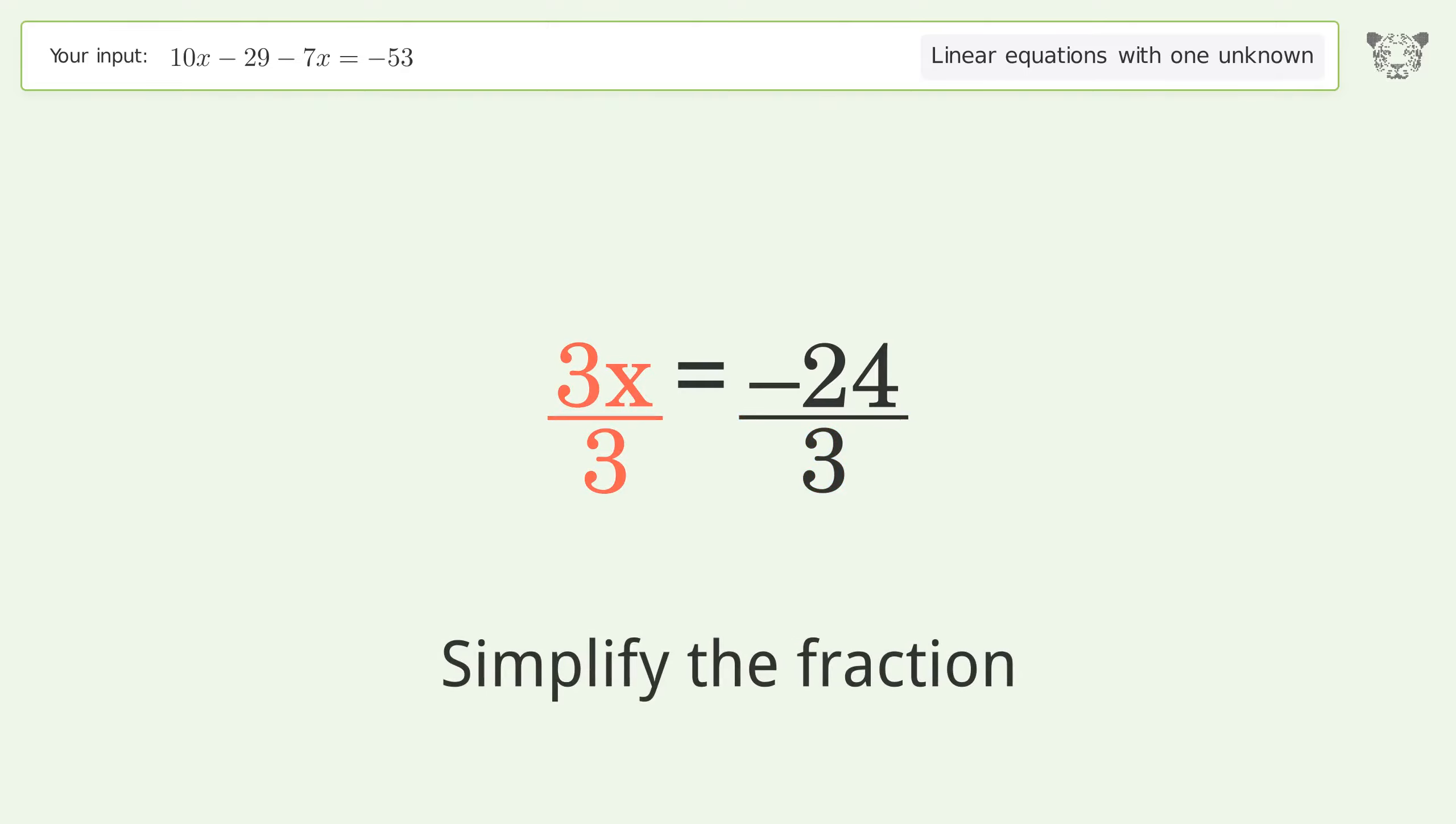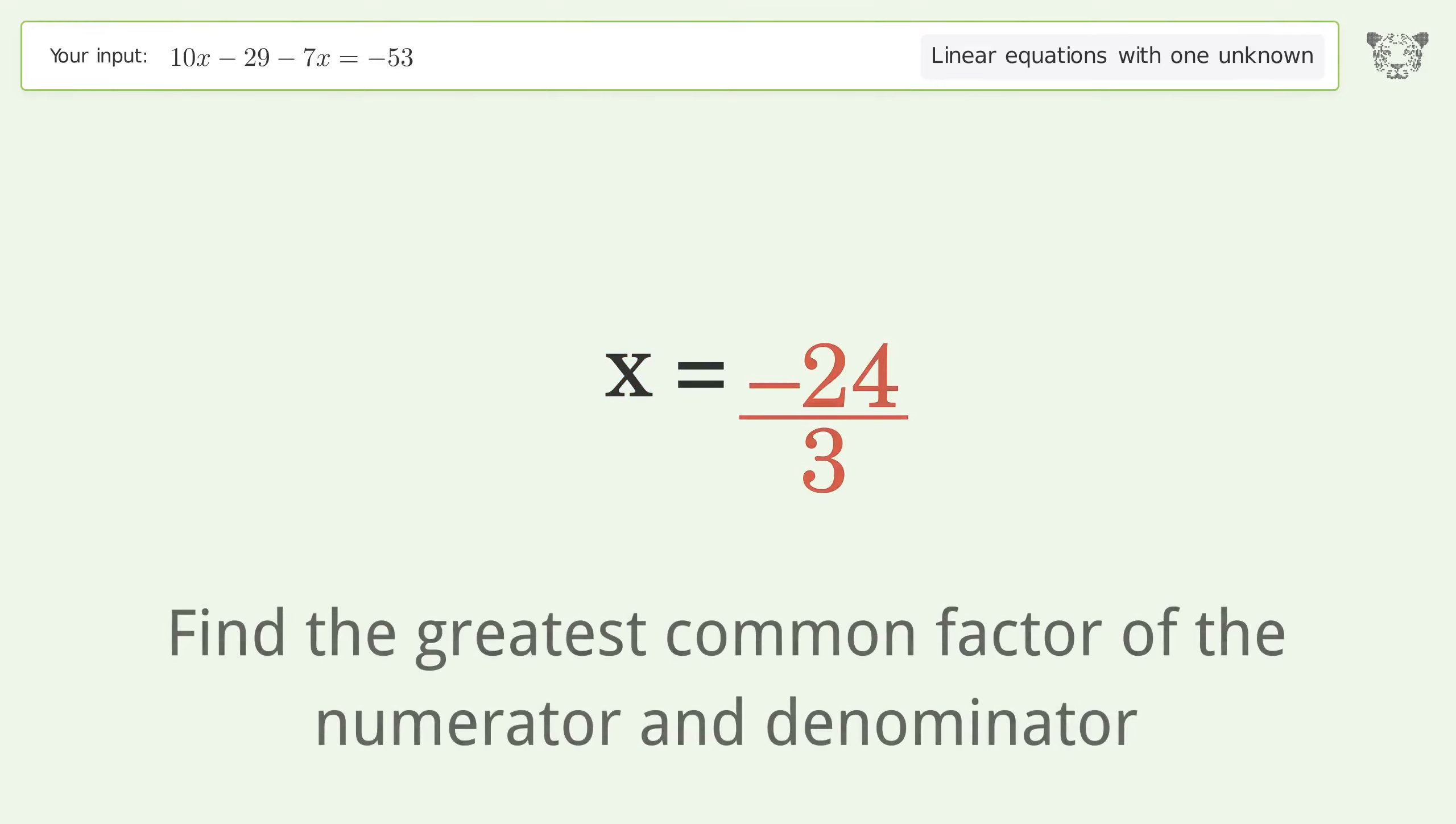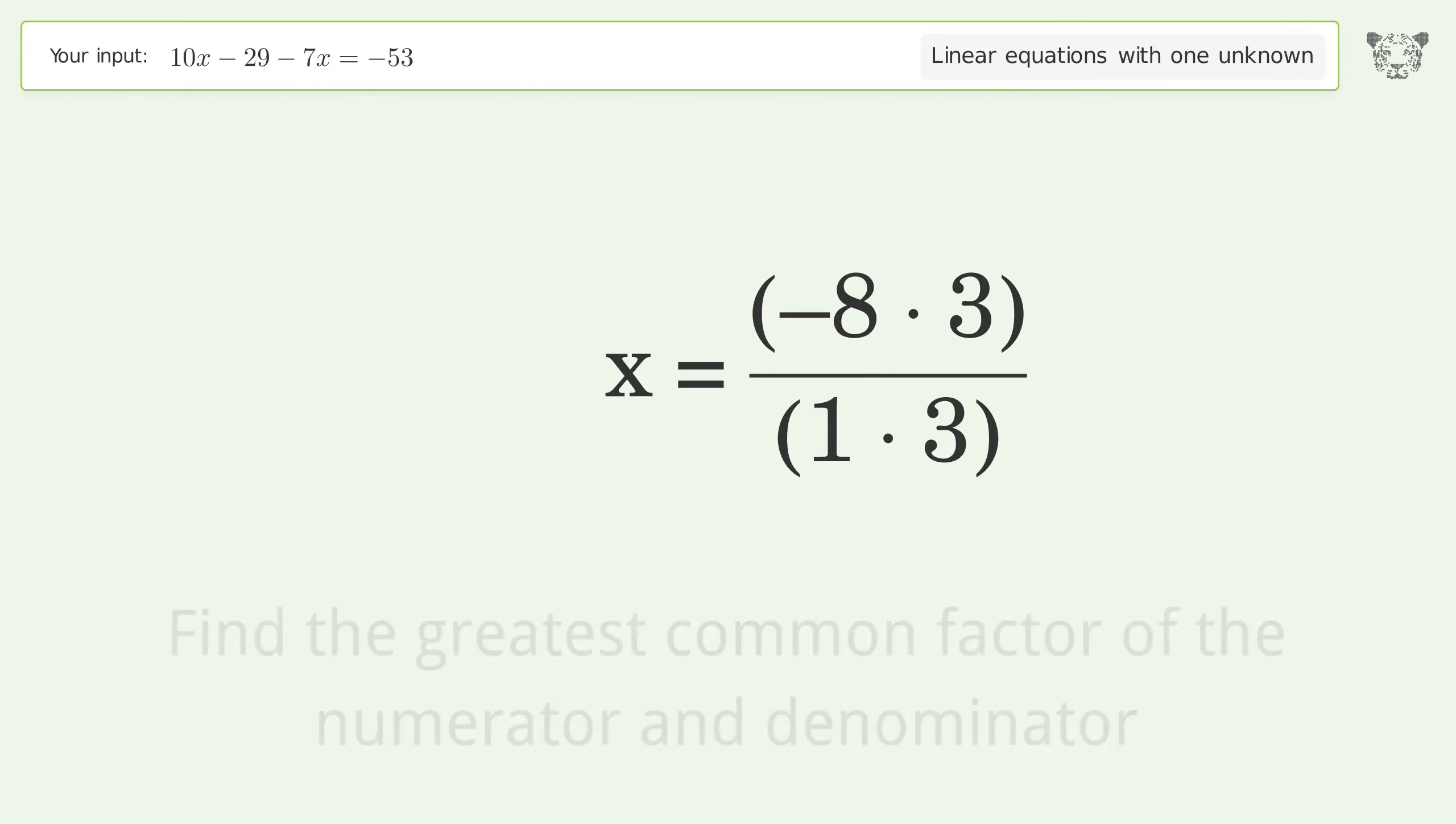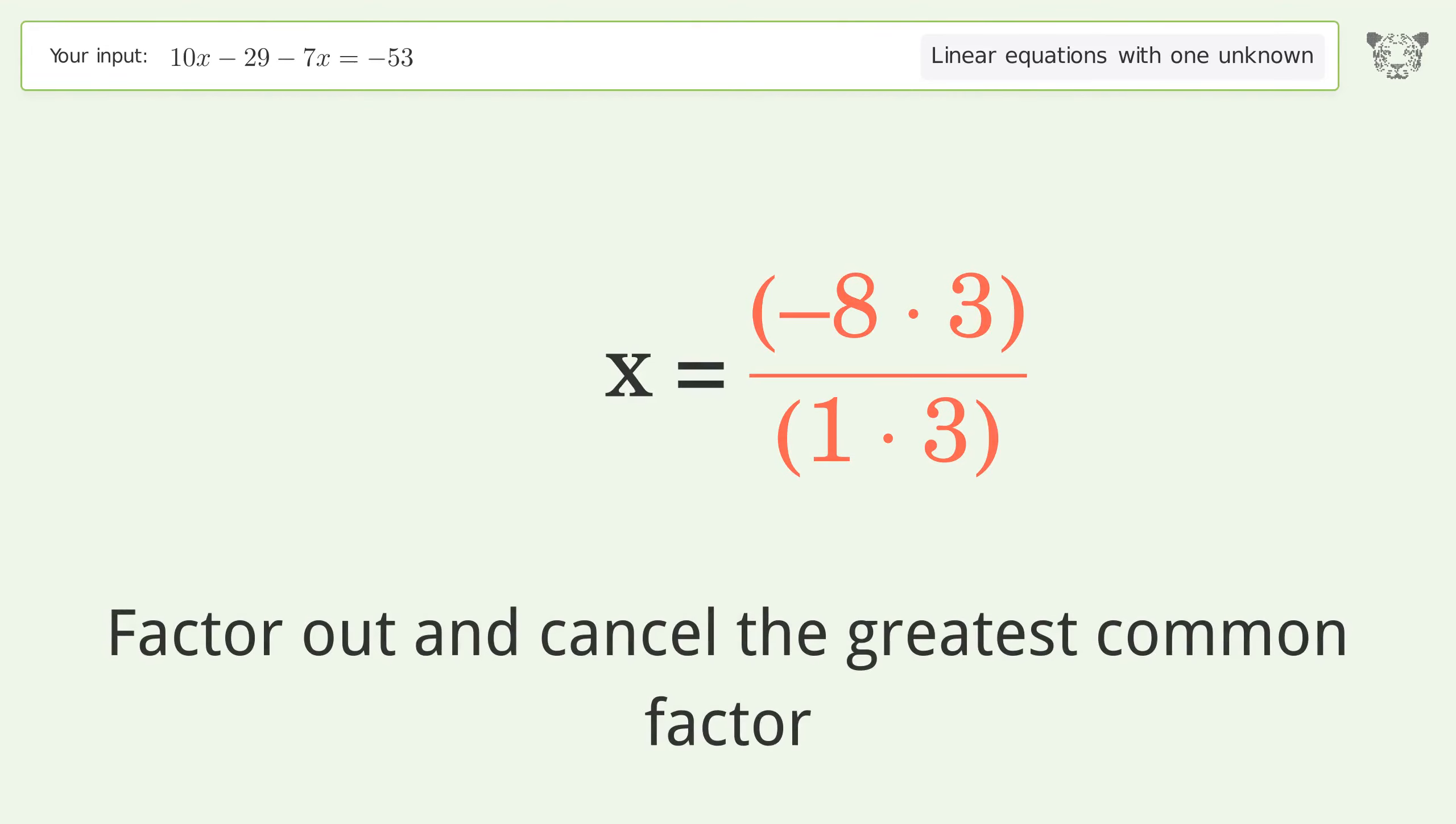Simplify the fraction. Find the greatest common factor of the numerator and denominator. Factor out and cancel the greatest common factor.